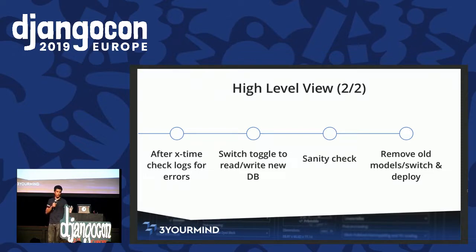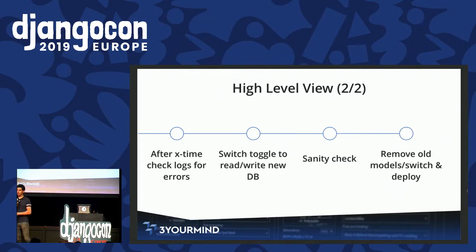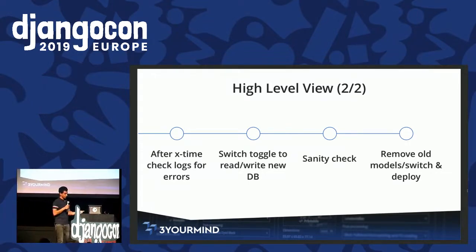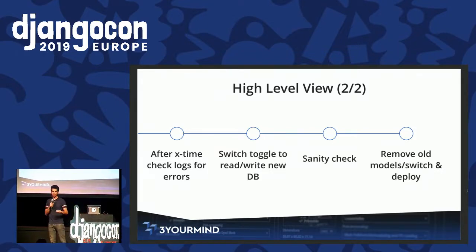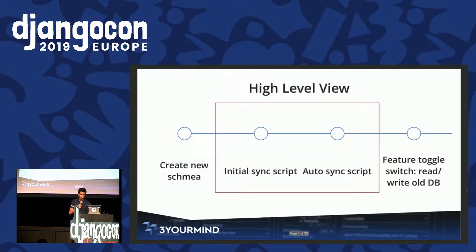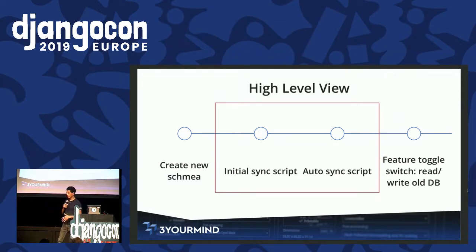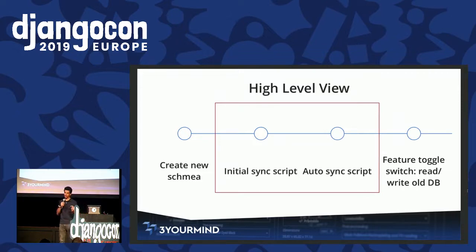Once you are okay and everything is checked, you can switch the toggle to the new models. In production, no downtime. Using the new models — if something goes wrong, you can immediately switch back. You do a sanity check after a while. Everything is fine — at this point you can remove the old models, remove the switch, and deploy again. Zero downtime. So what did we do? We made a very generic version of the initial synchronization and auto synchronization script. Then we created a way of describing the models and how they translate into each other, so that every time you want to migrate with zero downtime, all you do is describe how the models relate — and you make use of the synchronization script.